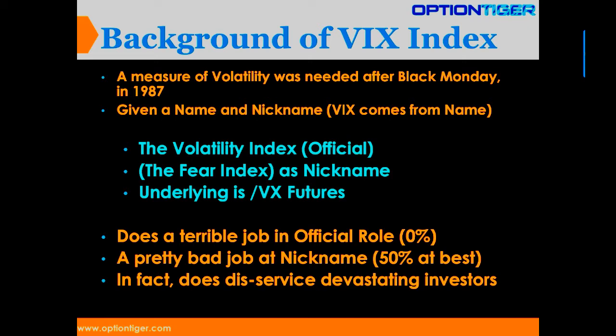The VIX was originally designed after Black Monday in October 1987, when the Dow Jones crashed 22% in one day. Ever since then, they were looking for a reliable volatility indicator, and they decided on something called the VIX — the Volatility Index — which is where it gets its name. Over time they also started calling it the fear index. All options need an underlying asset, and the closest one they could find was the /VX, which is the futures contract.